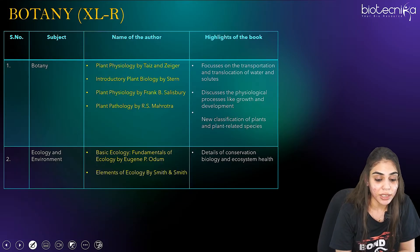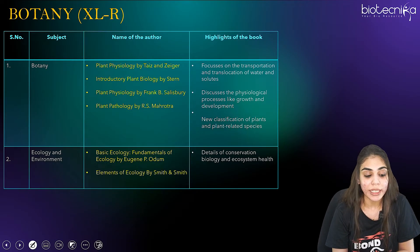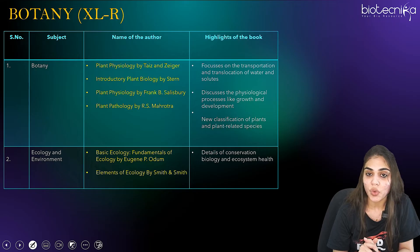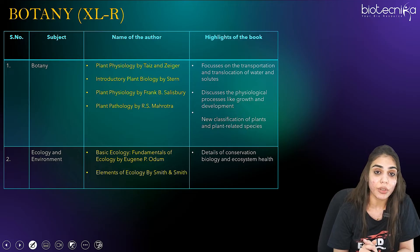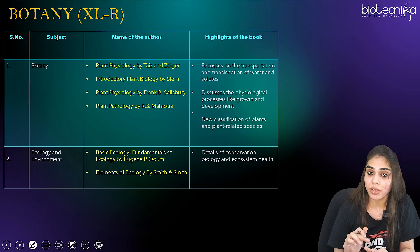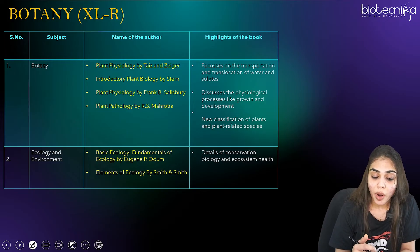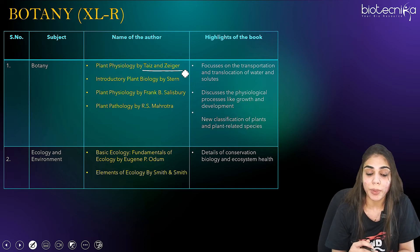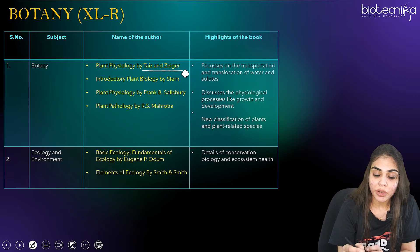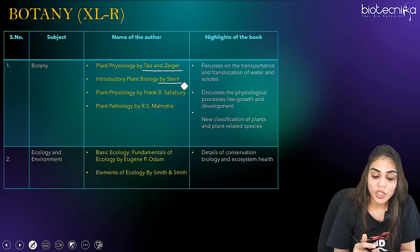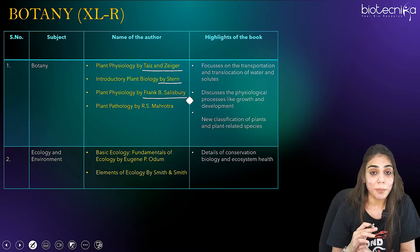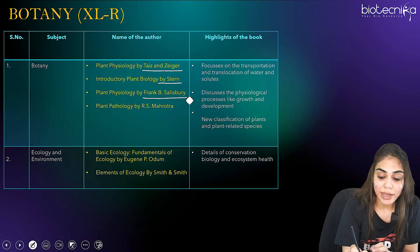Now coming to Section XL-R, or the botany section. The botany syllabus in GATE Life Sciences includes botany as well as ecology. For botany, you can go for Plant Physiology by Taiz and Zeiger — this is the best book. Alternatively, you can go for Introductory Plant Biology by Stern, or Plant Physiology by Frank B. Salisbury, or R.S. Mehrotra. The best book mentioned first is Taiz and Zeiger.